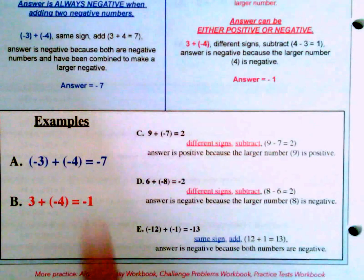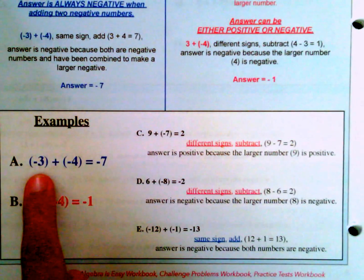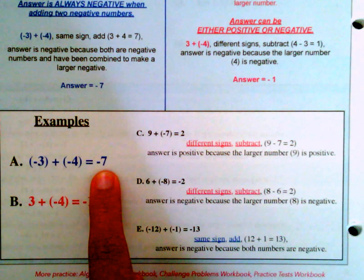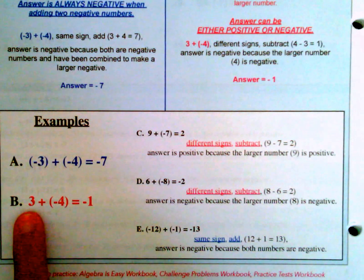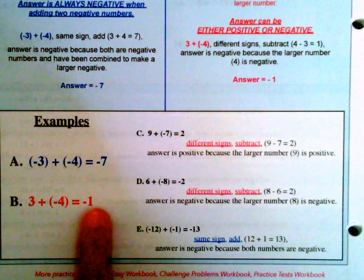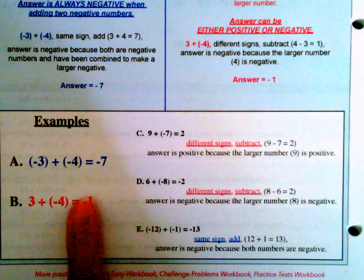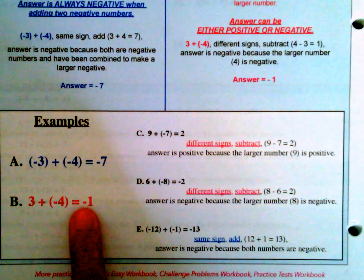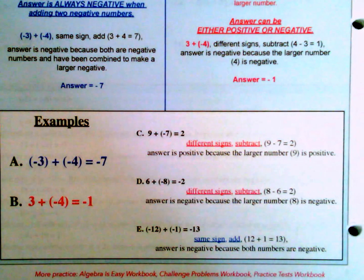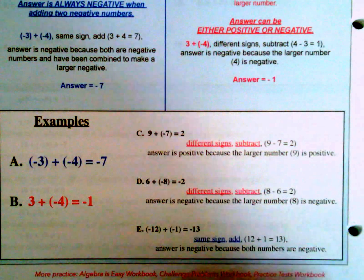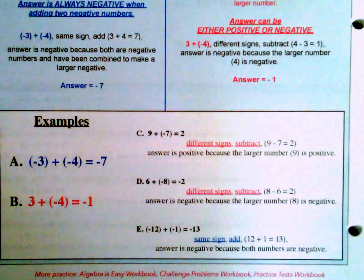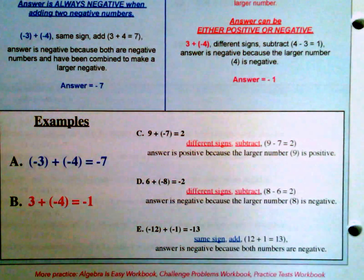In summary: negative plus negative makes a bigger negative. Positive plus negative can result in either a positive or negative answer depending on which number is larger.